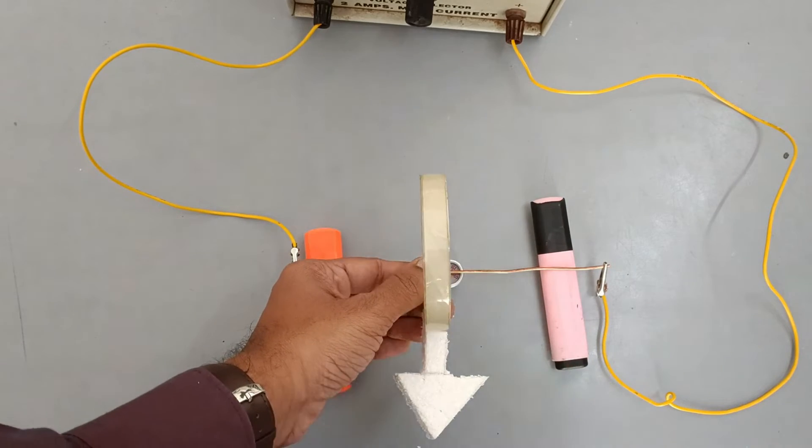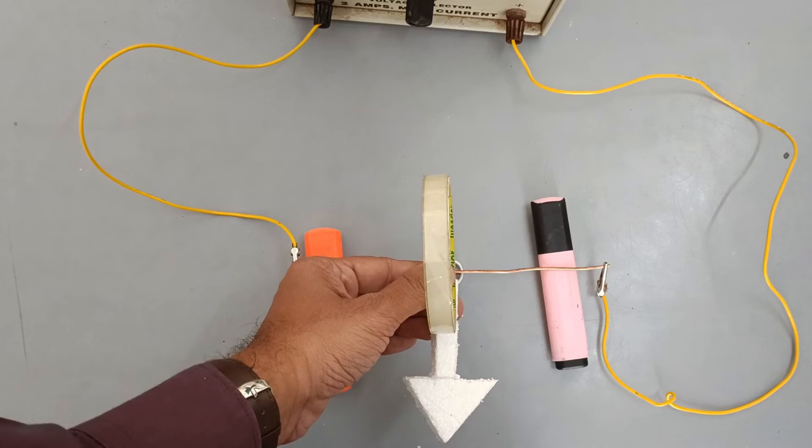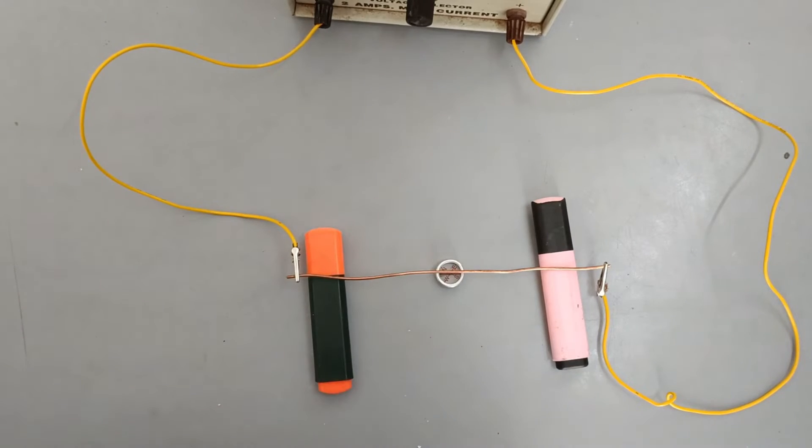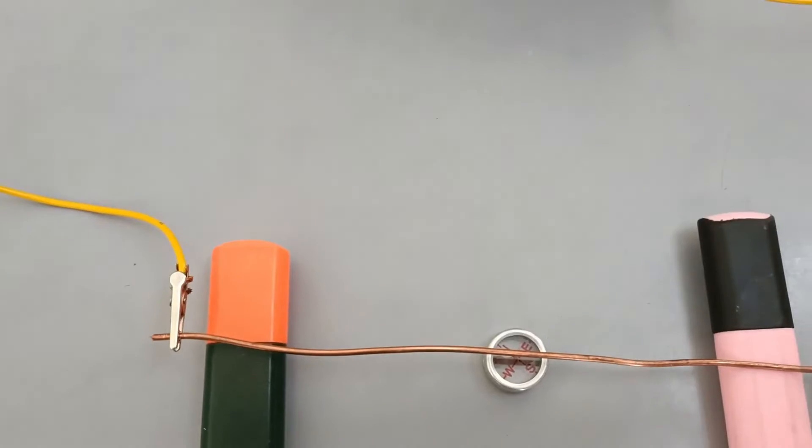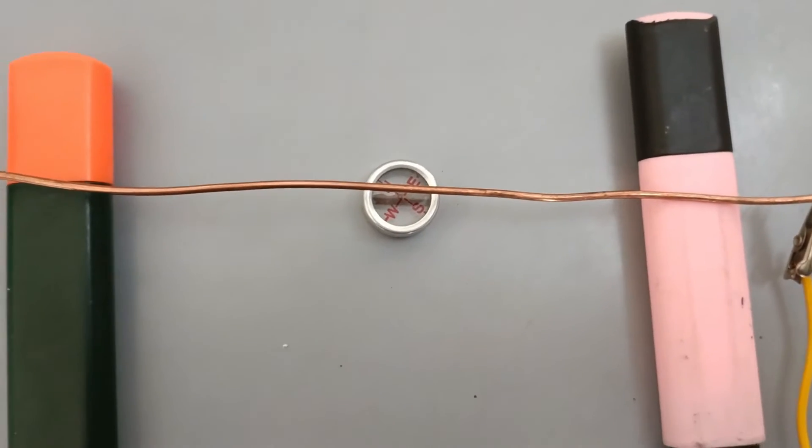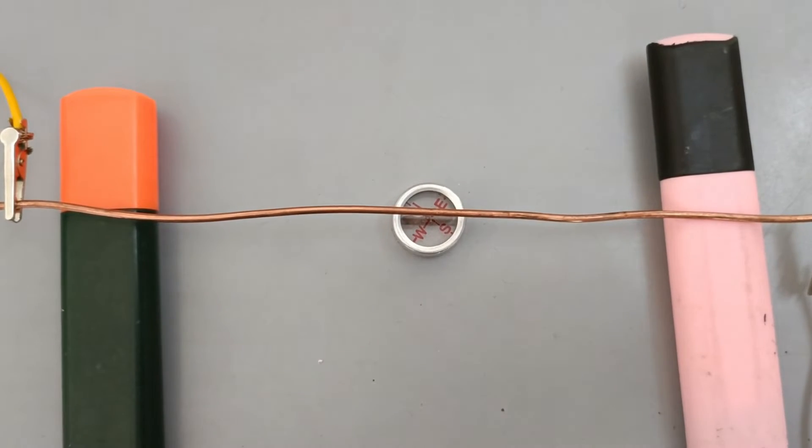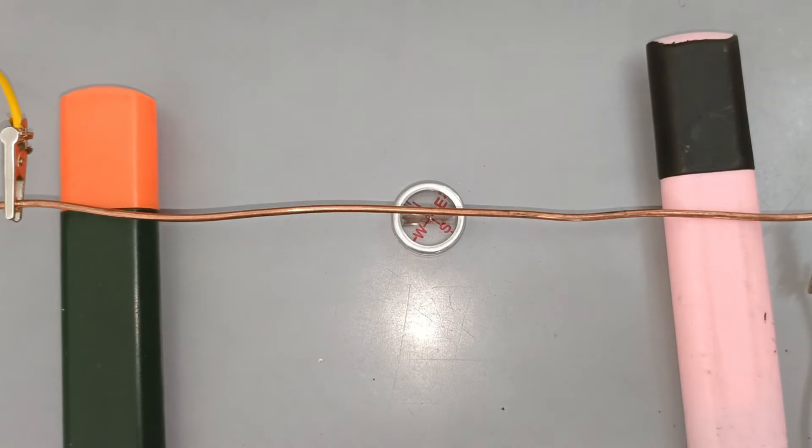The north of the magnetic needle of the compass will align itself in the direction of field shown here by an arrow. Now let's pass the electric current from the copper rod and observe the change in the direction of magnetic needle.